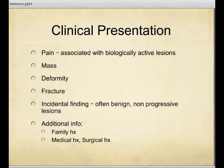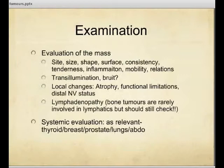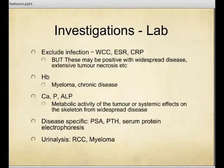Examination — again pretty straightforward. Looking at the lesion, whether there's a soft tissue mass, defining its characteristics, and looking for any other source. Investigations are important to exclude other causes for a mass and looking at disease-specific factors such as prostate and other sources for metastases.